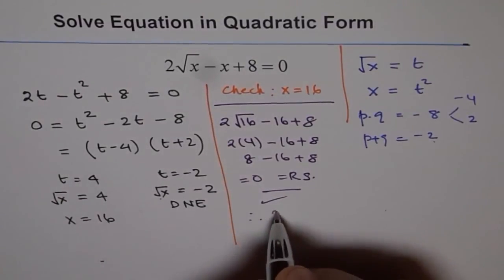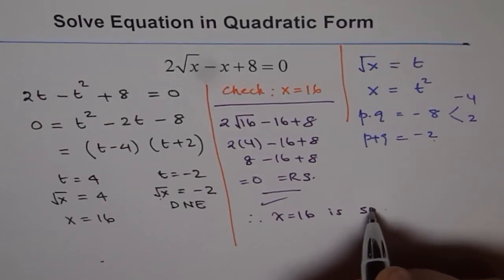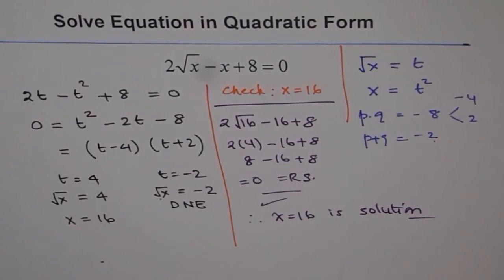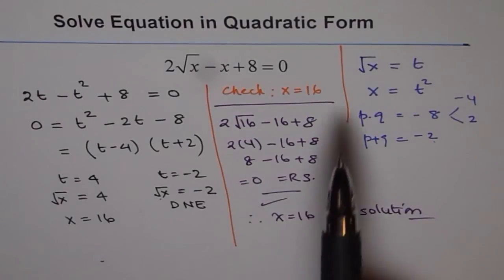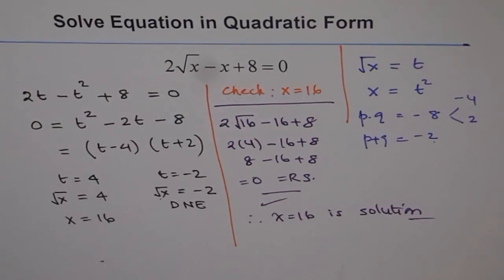And therefore we have a solution that x equals to 16 is solution of our equation, correct? So that's how we're going to solve this equation. See how substitution helped us to write the equation in a quadratic form and then we can use our factoring skills to find the answer, correct? I hope you appreciate it. Thank you!